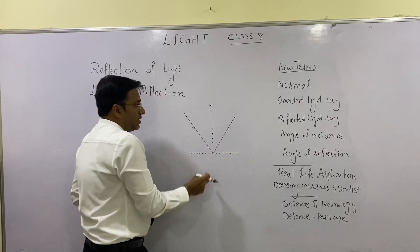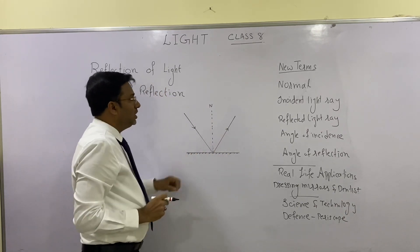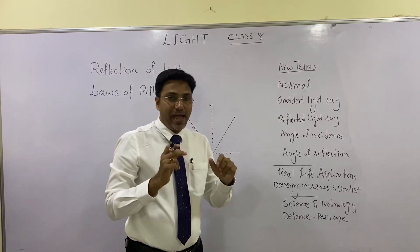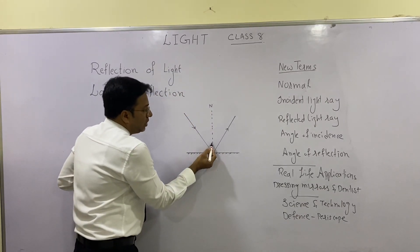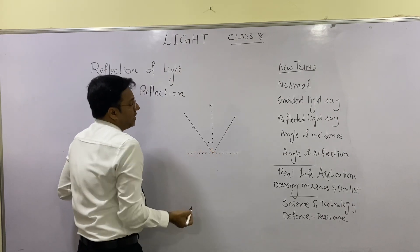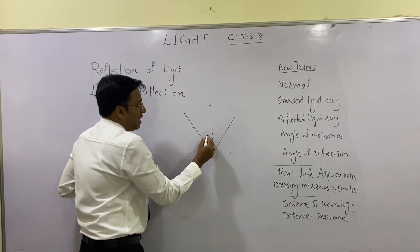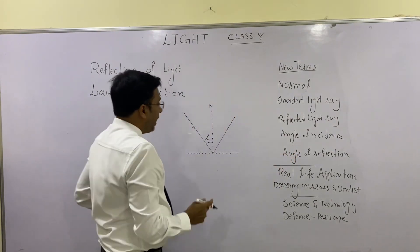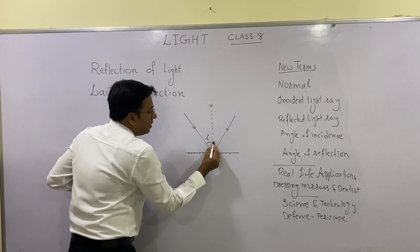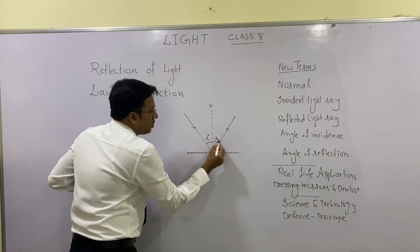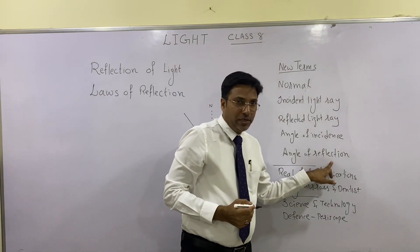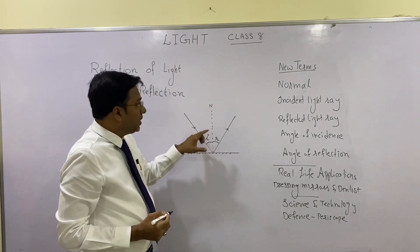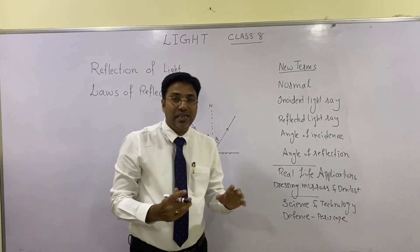Between the incident light ray and reflected light ray, a line is drawn which is called the normal. This normal is used to measure angles. The angle between the normal and the incident light ray is called the angle of incidence, and the angle between the normal and the reflected light ray is called the angle of reflection.